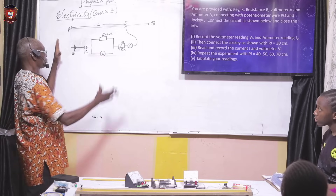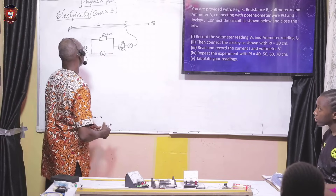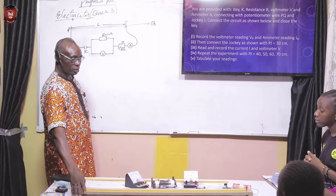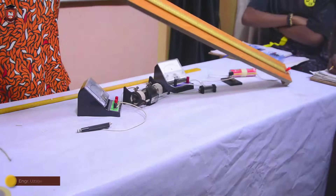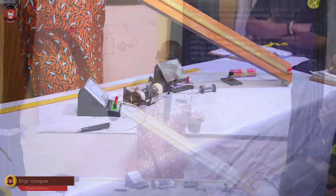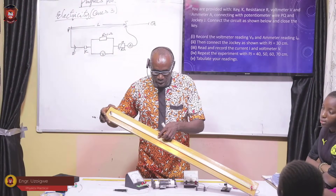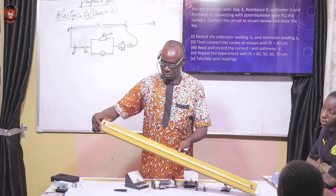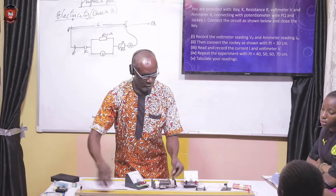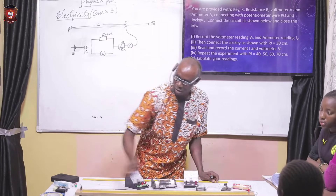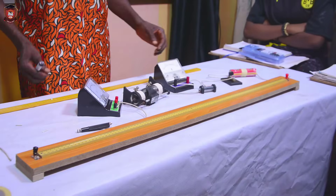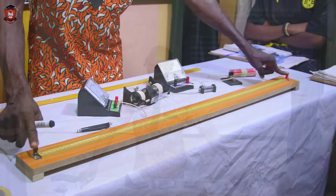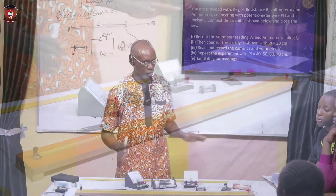If you look at this circuit diagram, you discover that PQ is a potentiometer wire. This is the potentiometer and PQ is the wire on top of it. The potentiometer has no positive or negative, irrespective of the two colors — they are the same, and any side can be used at any time.